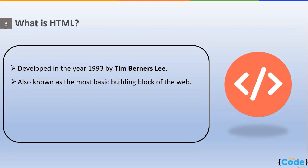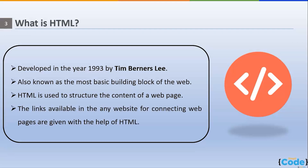HTML helps the browser understand the structure and style of a document for viewing over the internet. It allows web pages to host videos, images, and other applications. It also facilitates navigation within web pages or between websites through hypertext — which refers to the links that connect different web pages.